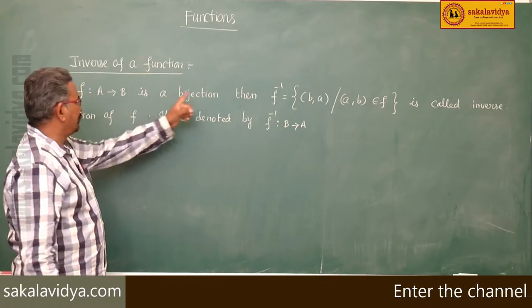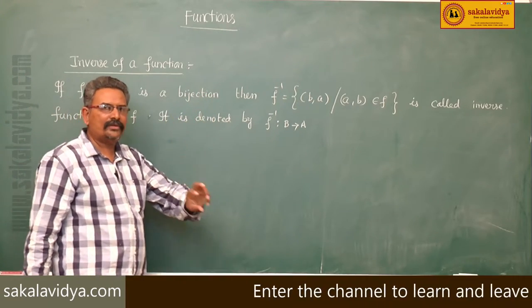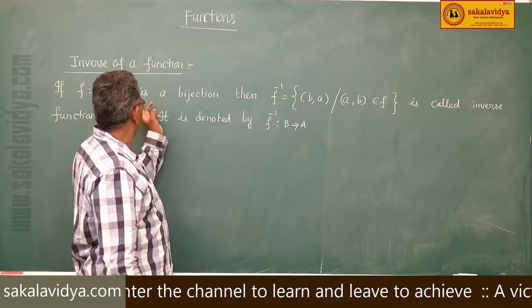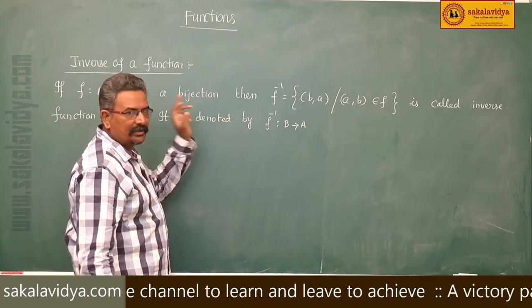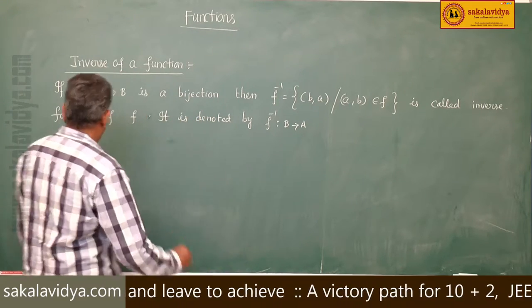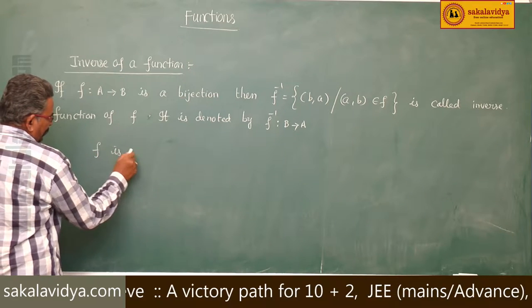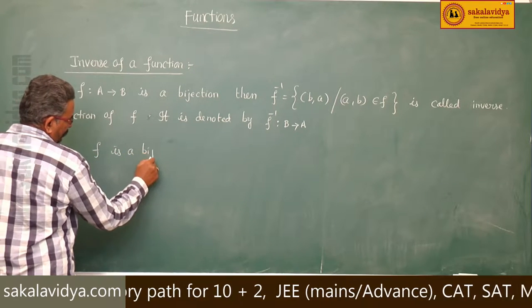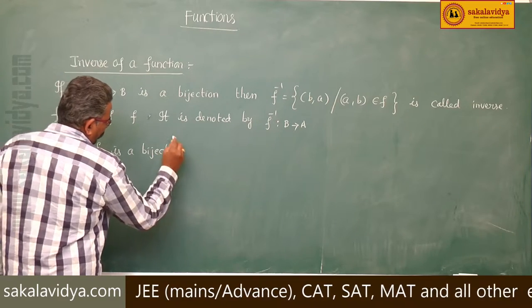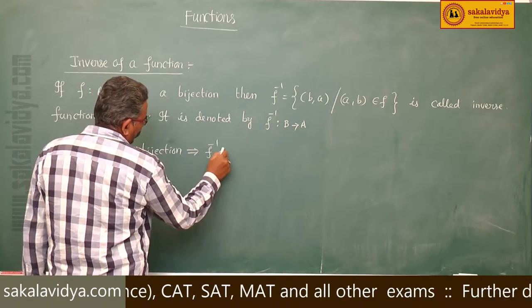If f is a bijection, then f is said to be an invertible function. If f is a bijection, then f inverse exists. So, f is a bijection implies f inverse exists.